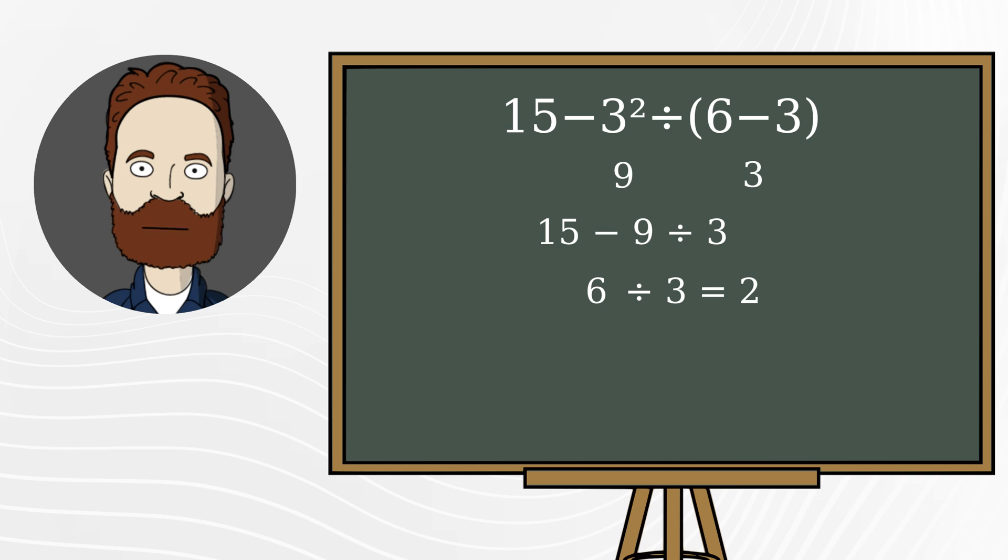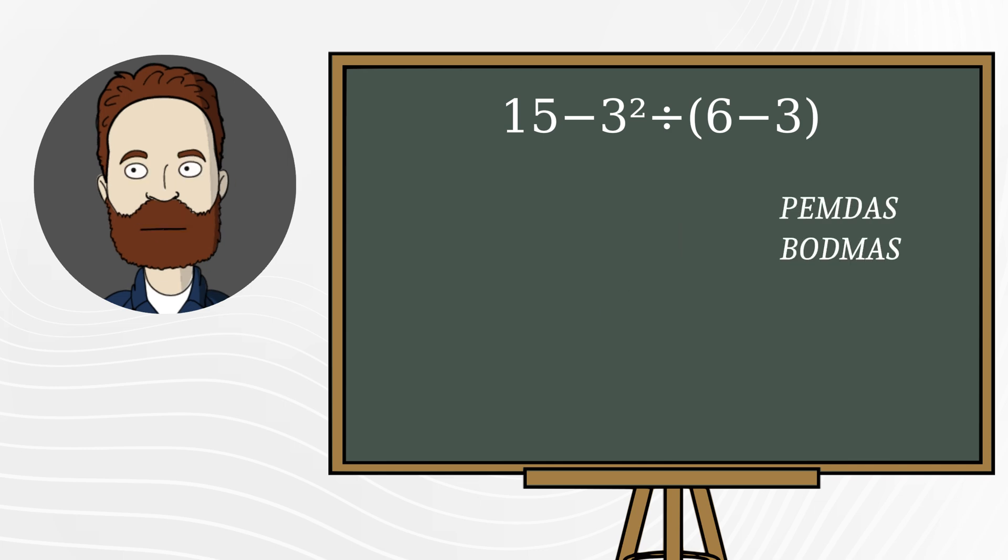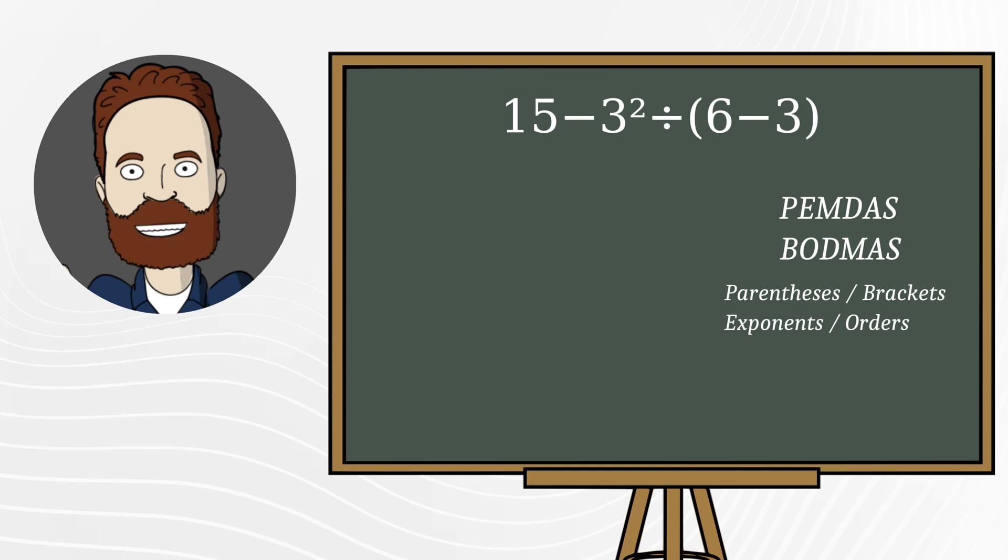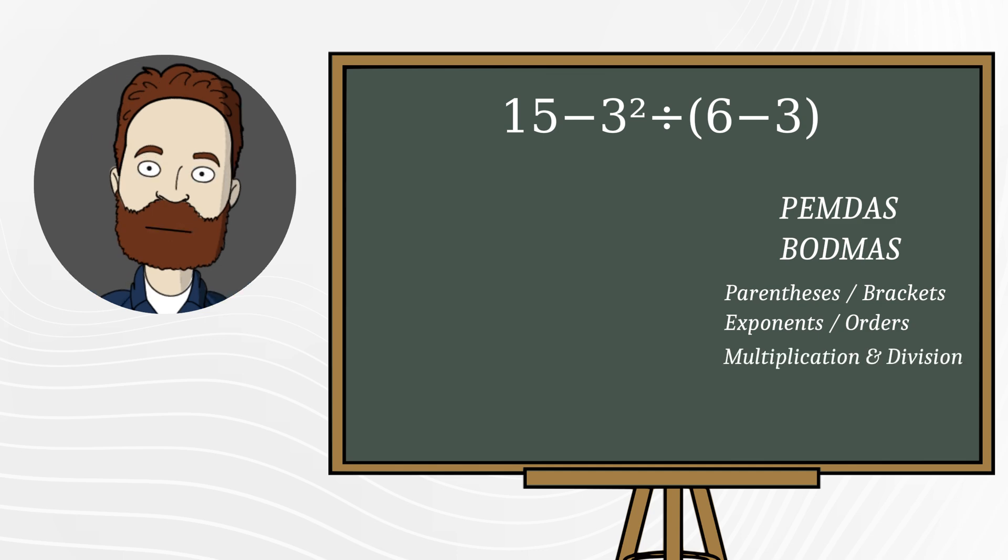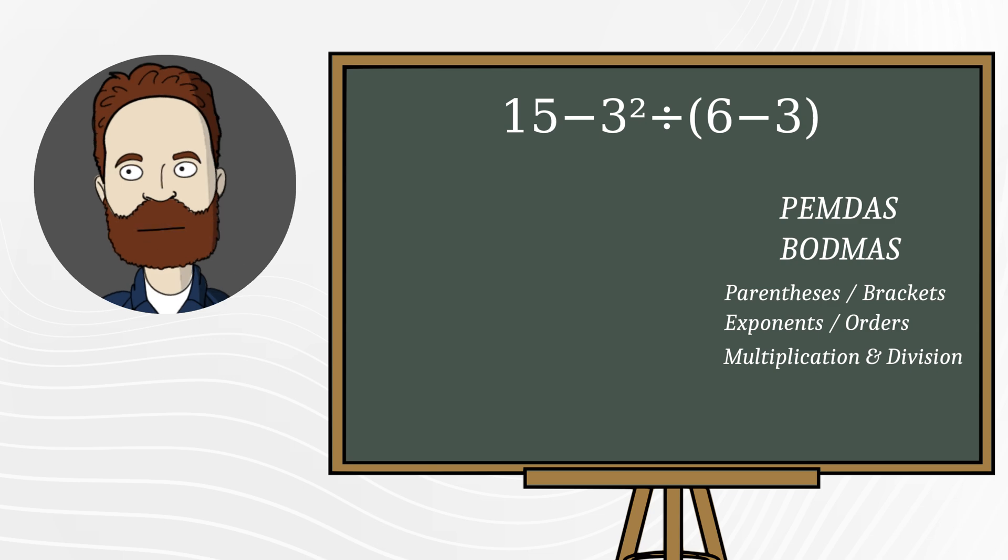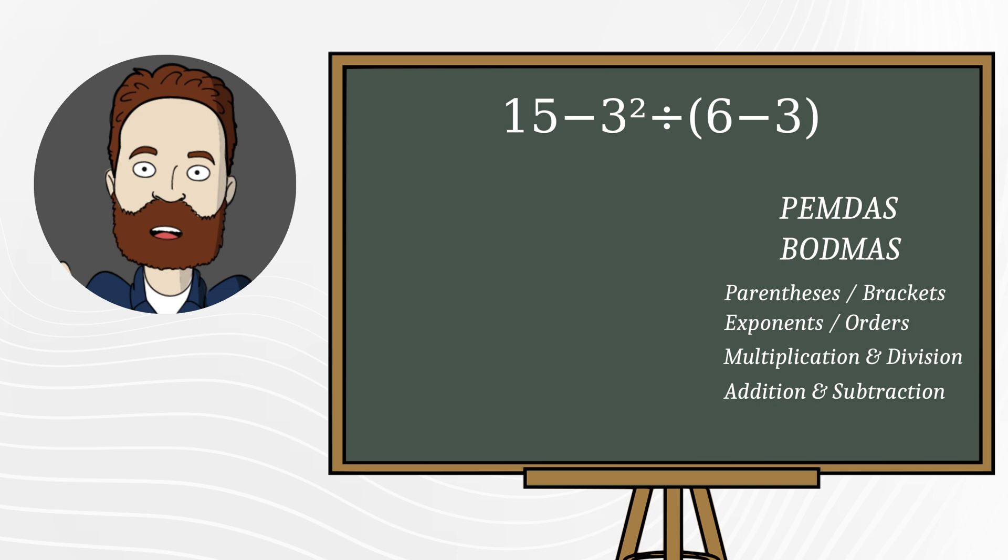Here's how to do it correctly. First, solve inside the parentheses. Then calculate the exponent. Next, perform any multiplication or division from left to right. Finally, perform any addition or subtraction from left to right.